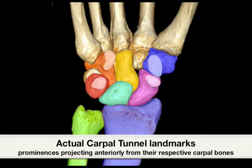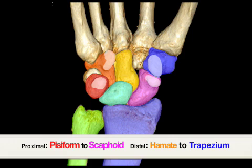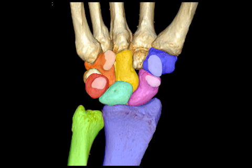The white areas are the actual insertion points of the carpal tunnel landmarks. From the red pisiform, it attaches to the purple scaphoid, and the orange hook of the hamate crosses over and attaches to the trapezium tubercle.